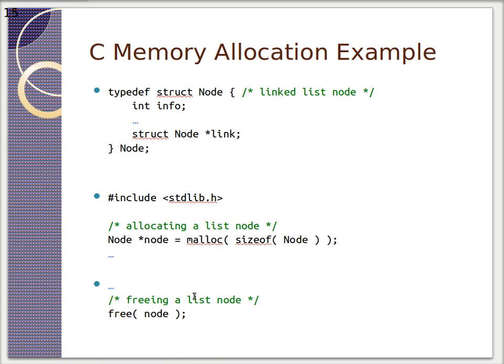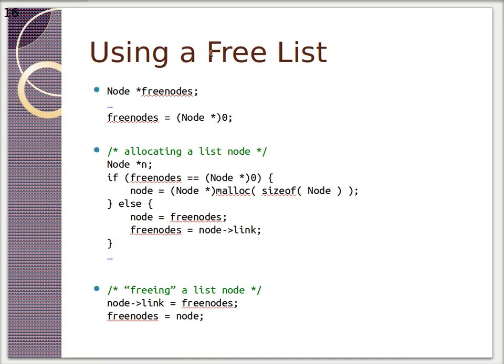One way to avoid calling malloc too much would be to keep something called a free list. A free list basically keeps a list of free nodes. These are nodes that you have already used.